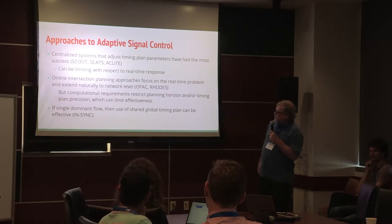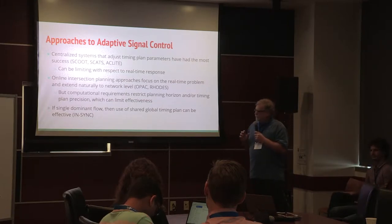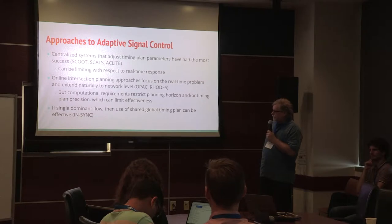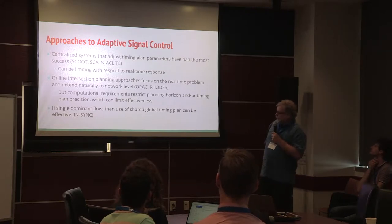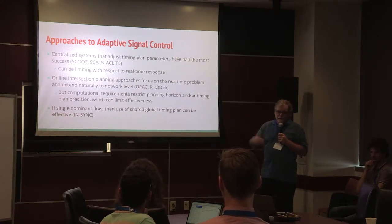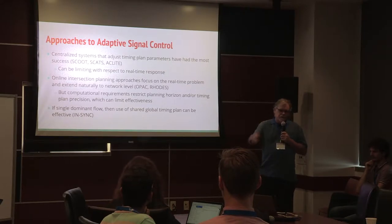A second approach, online intersection planning, focuses on the real-time problem and extends naturally to the network level with a decentralized view, where networks communicate with one another to achieve network-level coordination. Historically, the computational requirements for solving the intersection control problem have restricted planning horizons to very small windows — like 15 to 20 seconds ahead — or required operating with imprecision with respect to time, losing the nonlinear nature of traffic flows.